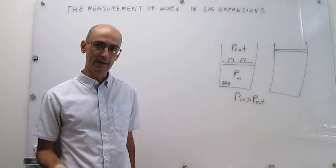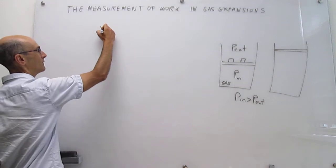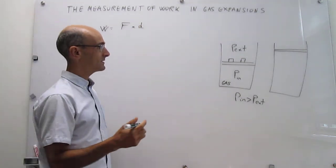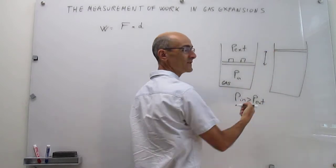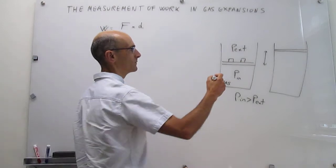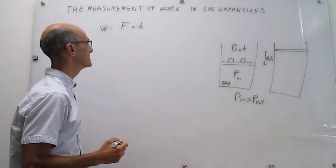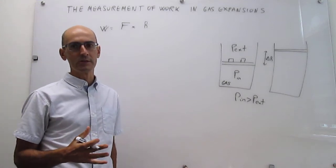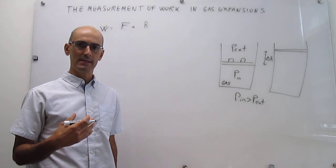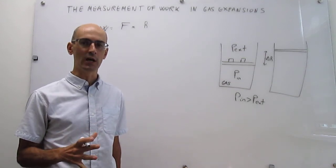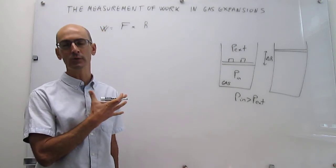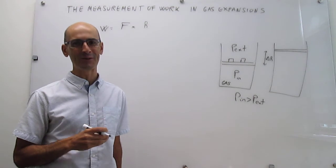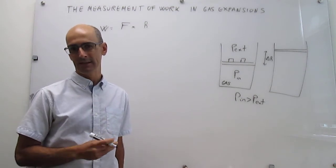Now let's see how we can quantify this gas expansion. We know that the definition of work is equal to force times distance. In this particular case, distance is very easy to measure because it's just the difference in height of that piston — what we call delta H, the change in height. Something very useful in physical chemistry is to work with differential expressions that we can then generalize to integrated expressions according to the case. So we're going to handle this expression in differential form, and we'll see later how simple that differential expression becomes when applied to specific cases.